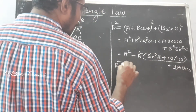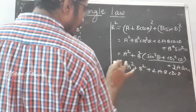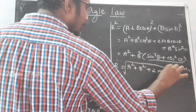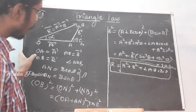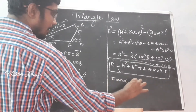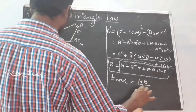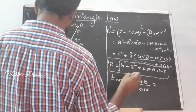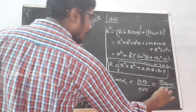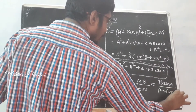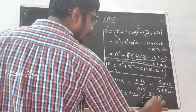This simplifies to A² + B² + 2AB cosθ, using the identity sin²θ + cos²θ = 1. So R² = A² + B² + 2AB cosθ. This is the resultant formula. For the direction angle, tan α = NB / ON, where NB = B sinθ and ON = A + B cosθ.